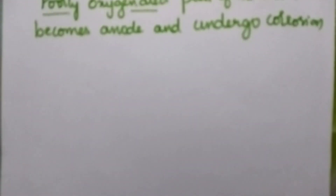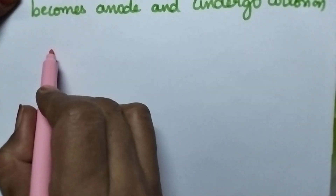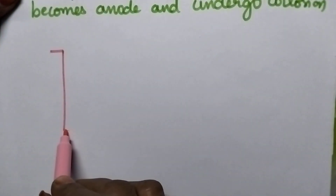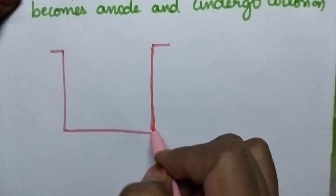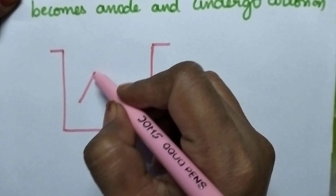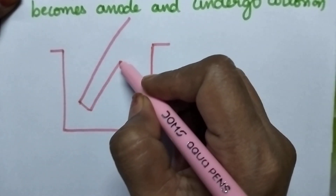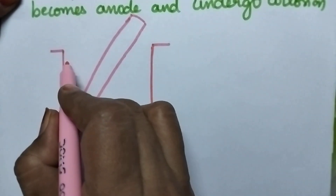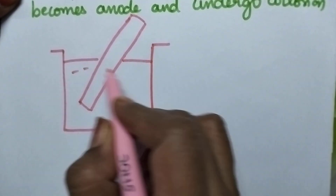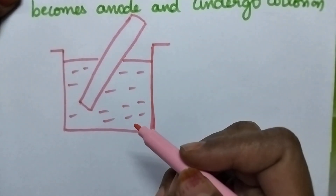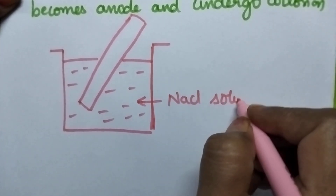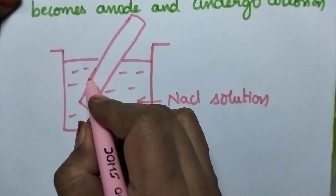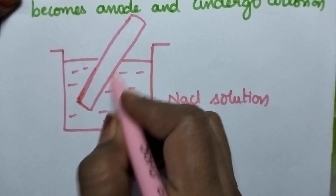Let us see one good example. Whenever a zinc rod is partially immersed in NaCl solution, the less oxygenated part becomes anode and undergoes corrosion. So, it is NaCl solution and this is the zinc rod which is partially immersed.